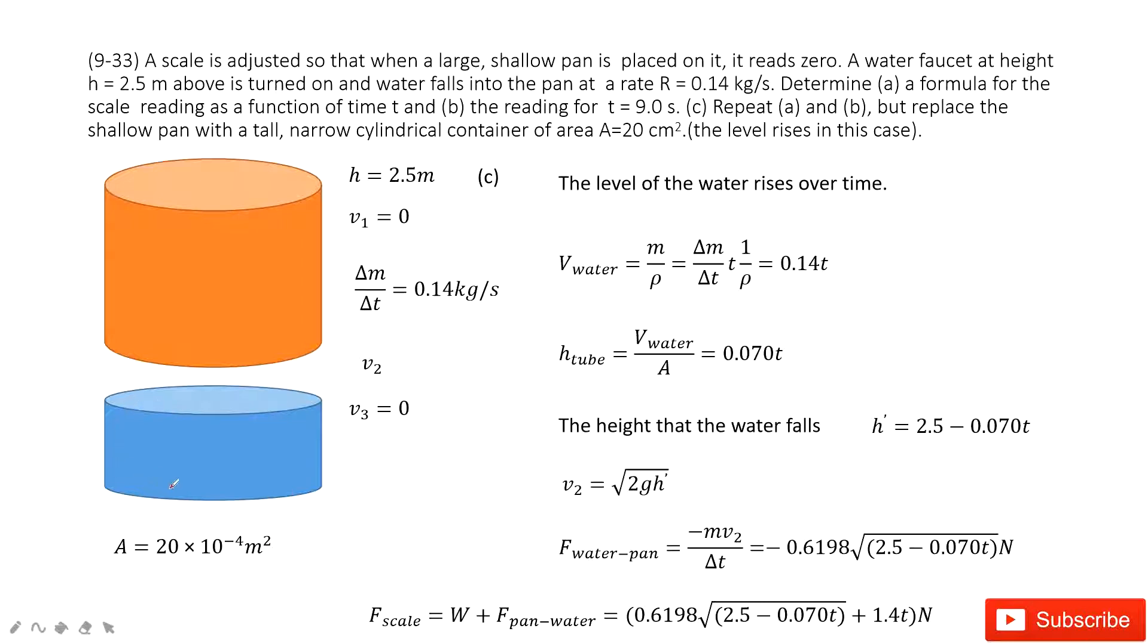So this time, this is a tall narrow cylinder container. What does that mean? It means when this water falls down, this height will increase. So when this water falls down from the orange pile to the blue pile, what is equal? Volumes.